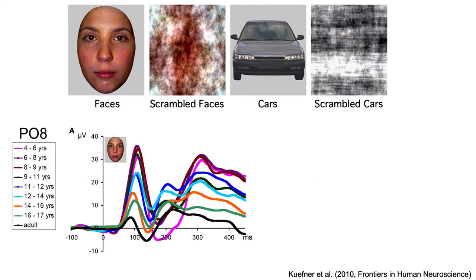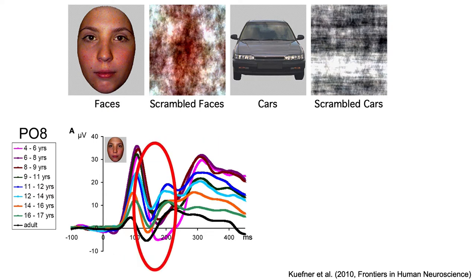Here are the ERP waveforms recorded to faces over right occipitotemporal cortex. As you can see, there were huge differences across ages in the P1 wave, with a much larger P1 in younger children and the smallest P1 in adults. Children typically have larger ERPs than adults, a result of several factors including a greater number of synapses and thinner skulls in children. Kufner et al. also found a complex set of changes in the N170 latency range, with latencies tending to be earlier in older subjects, likely reflecting increased myelination.